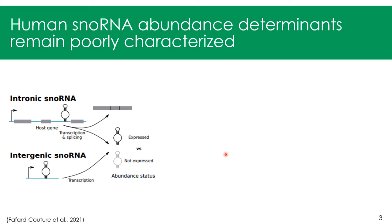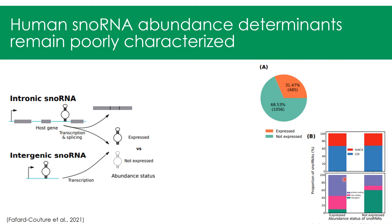We recently characterized the expression of SNORNAs in several healthy human tissues and interestingly found that only less than a third of all annotated SNORNAs are expressed. Expressed SNORNAs are mostly encoded within host genes, either protein-coding or non-coding, while unexpressed SNORNAs are mostly encoded within intergenic regions. The ratio of CD box to HACA box SNORNAs doesn't really change between the two abundance statuses.